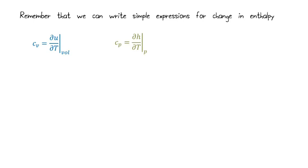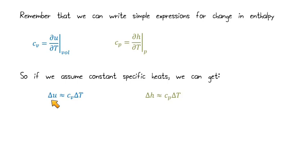All right. One other thing that it's important for us to remember is that in thermo, we were able to relate changes in enthalpy and changes in internal energy to changes in temperature using the specific heats. So we have the specific heat at constant volume and the specific heat at constant pressure relating to the internal energy and the enthalpy, respectively. So if we had constant specific heats, we assume that they didn't change with temperature, we could write these approximate expressions for delta U and delta H.